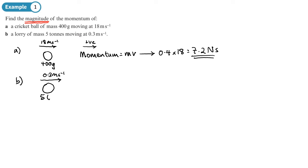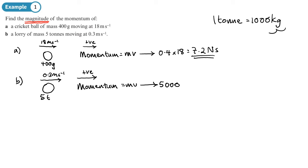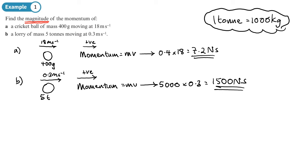Part b: a much lower velocity of 0.3 meters per second, five tons. I'll take this direction as positive. Momentum equals mass times velocity — mass must be in kilograms, and one ton equals one thousand kg, so five thousand times 0.3 gives one thousand five hundred newton seconds. Notice the difference: the cricket ball at high speed but low mass versus the truck at much lower velocity but much bigger mass ends up with a much higher momentum.